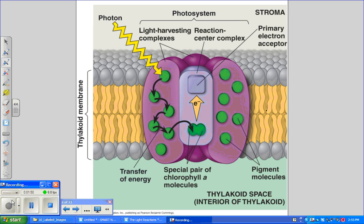As soon as the chlorophyll electron is excited to a higher energy level, the primary electron acceptor captures it. This is a redox reaction, meaning that the reaction center chlorophyll is oxidized, losing an electron, and the primary electron acceptor is reduced, accepting an electron.